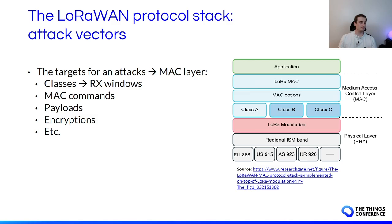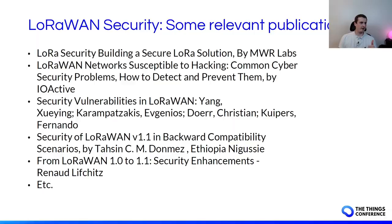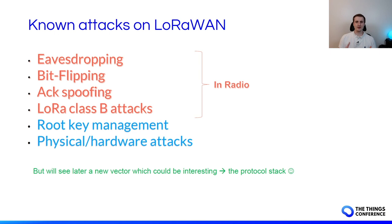Let's also look at the security details of LoRaWAN. There are some relevant publications made before this presentation, mostly focused on the encryption side. Known attacks you can do on LoRaWAN include eavesdropping, bitflipping, ACK spoofing, LoRa class B attacks, root key management for ESP8266 endpoints, and physical hardware attacks such as dumping keys from ESP8266 nodes found in the wild.